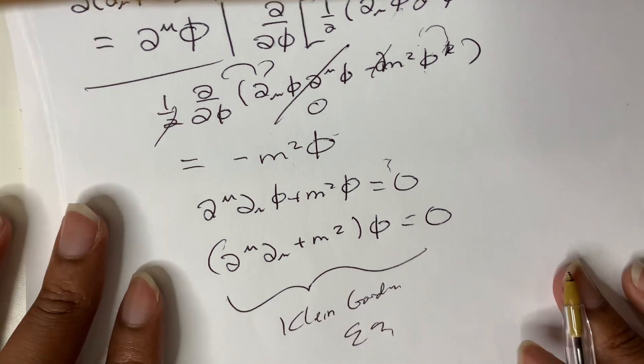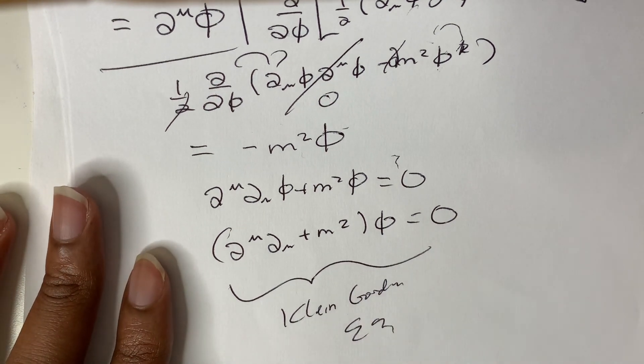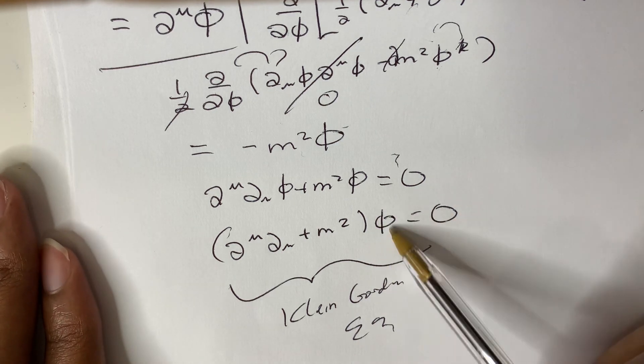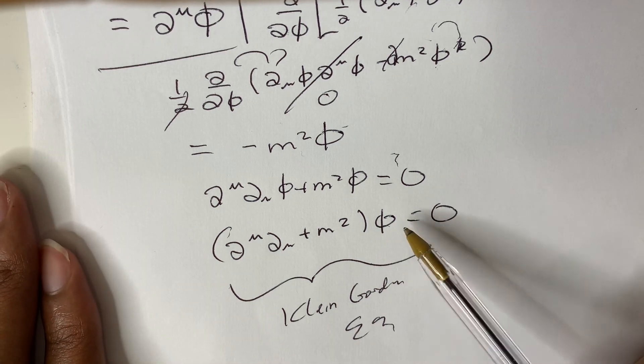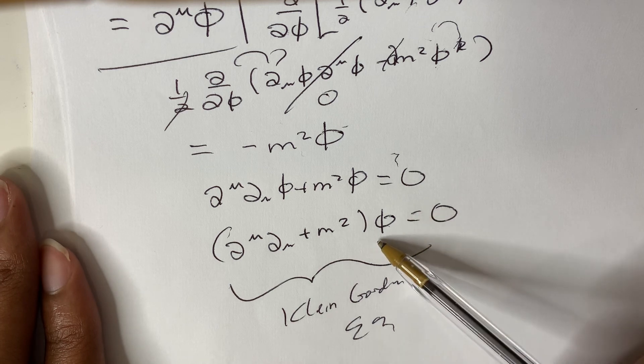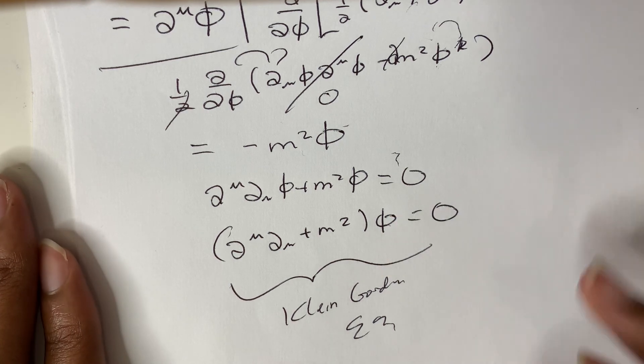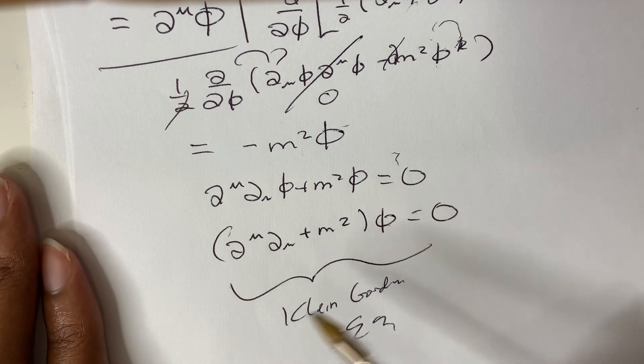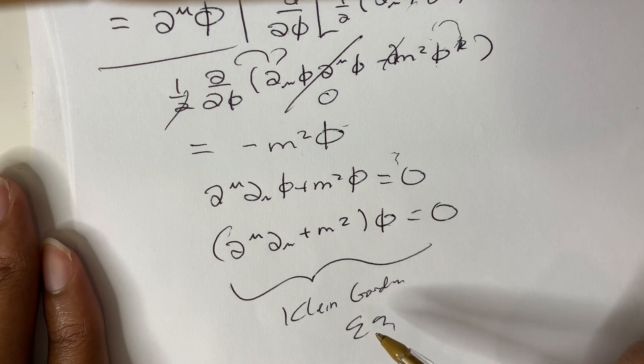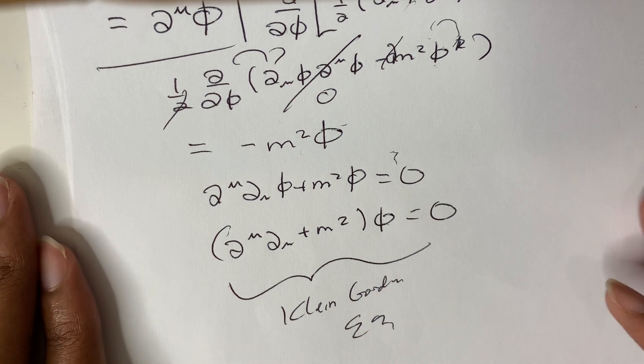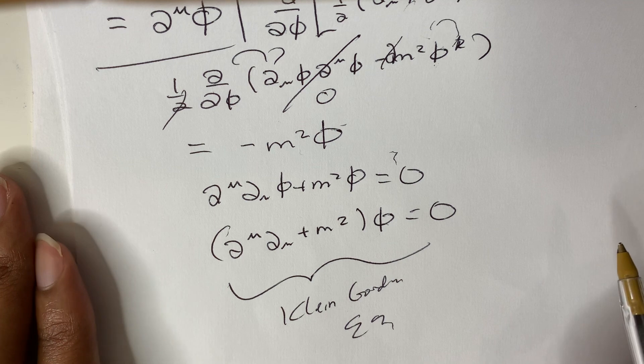So that is how you derive it from the Lagrangian density. The Klein-Gordon equation describes the free scalar field of a spin zero particle. And we will be solving this equation in the next video on QFT. I hope you guys have a great day and stay safe. Bye.